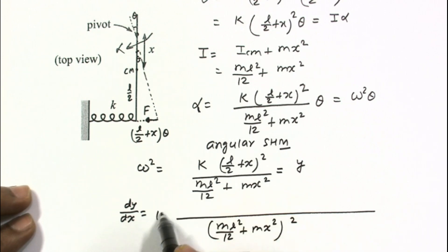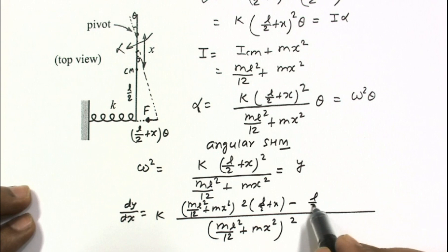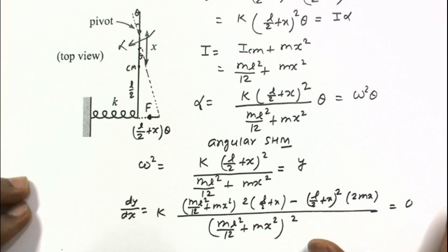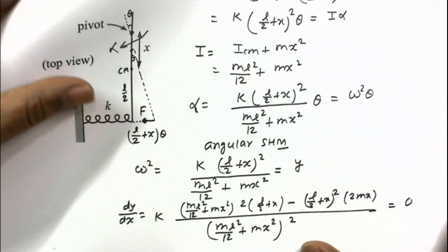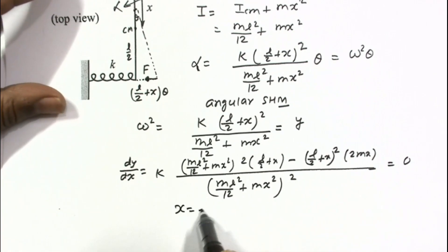The denominator will be ML squared by 12 plus MX squared whole squared. This K will remain as a constant and this will be as it is ML squared by 12 plus MX squared. The differentiation of this term is L by 2 plus X, minus L by 2 plus X squared and the differentiation of this term is 2MX. Put this equal to 0 and after solving this equation, X will come out as L by 6.